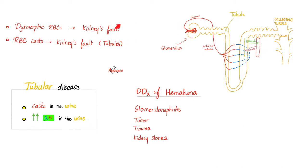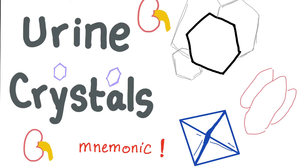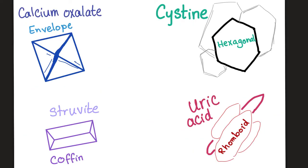So if I have glomerulonephritis, I should see both. Why else do we do urine microscopic examination? Maybe to look for urine crystals — kidney stones, nephrolithiasis. Here are some shapes for urine crystals: calcium oxalate kidney stones look like an envelope; cysteine kidney stones have a hexagonal shape; struvite stones, or staghorn calculi, have the coffin lid shape; uric acid stones are rhomboid.